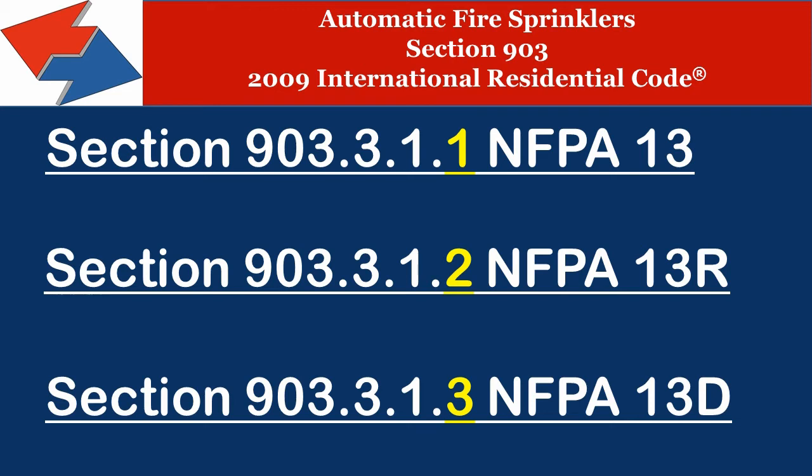Throughout the 2009 International Building Code, these three automatic fire sprinklers are often discussed. Instead of having to refer to Chapter 9 each time an automatic fire sprinkler is referenced,